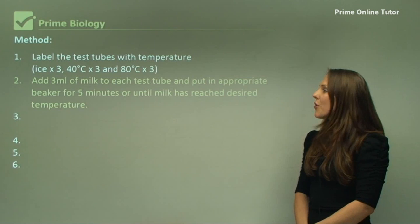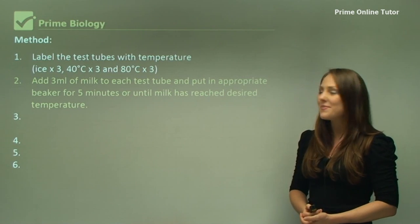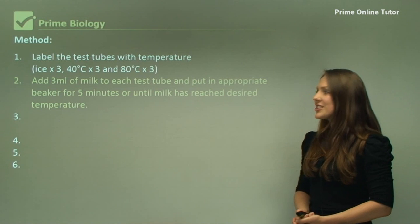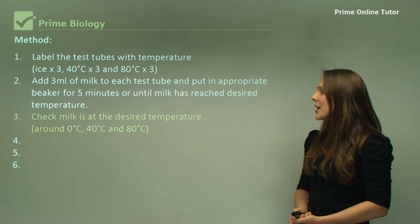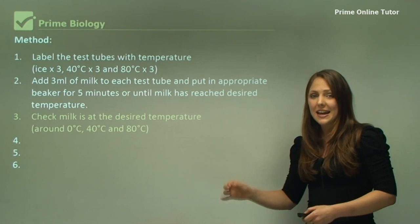You add three mils of milk to each test tube and put in the appropriate beaker for five minutes or until milk has reached the desired temperature. Check milk is at the desired temperature around zero, 40, and 80 degrees.